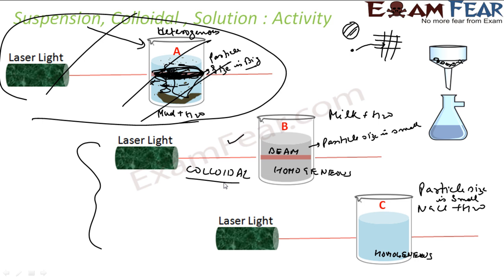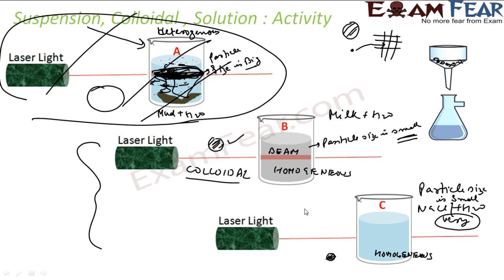In the suspension, the particles are the largest; in the solution, the particles are the smallest; and in the colloidal, the particle size is somewhere in between. The colloidal particles are just the right size to reflect light, which is why you see the Tyndall effect. In the solution, the particles are so small that light cannot actually hit them and reflect, so we don't see this effect. We will understand the Tyndall effect in more detail later.